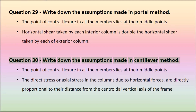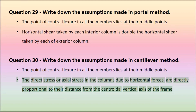Horizontal shear taken by each interior column is double the horizontal shear taken by each exterior column. Question 30: Write down the assumptions made in cantilever method. The point of contraflexure in all the members lies at their middle points. The direct stress or axial stress in the columns due to horizontal forces are directly proportional to their distance from the centroidal vertical axis of the frame.